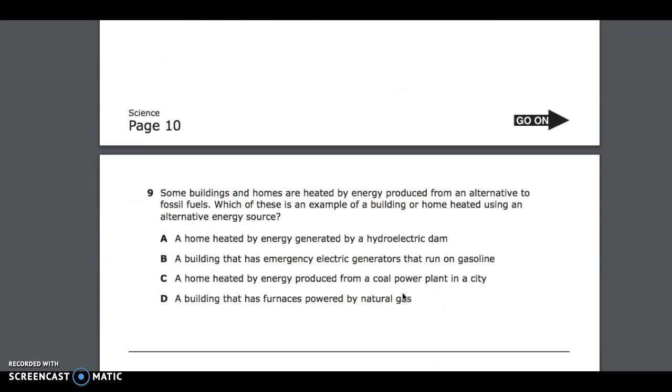Number 9. Some buildings and homes are heated by energy produced from an alternative to fossil fuels. Which of these is an example of a building or home heated using an alternative energy source? A, a home heated by energy generated by a hydroelectric dam; B, a building that has emergency electric generators that run on gasoline; C, a home heated by energy produced from a coal power plant in a city; D, a building that has furnaces powered by natural gas.